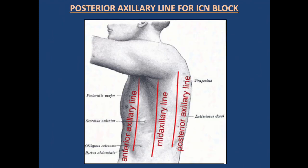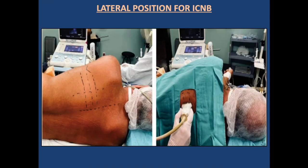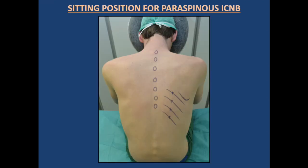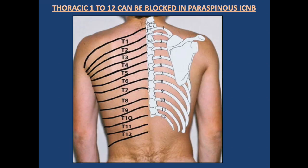This diagram shows the anterior axillary line, mid-axillary line, and posterior axillary line. Intercostal block is done at the posterior axillary line, but in higher blocks the shoulder and musculature obstruct access. Additional diagrams show lateral position, modified prone position with the hand hanging to drag the scapula away, sitting position for paraspinous intercostal nerve block, and how intercostal nerves from T1 to T12 can be blocked by the paraspinous intercostal technique.